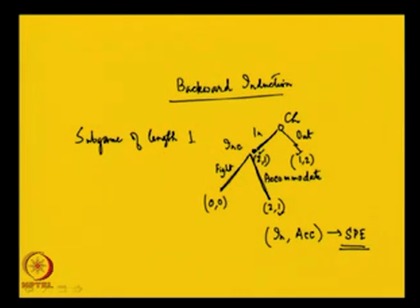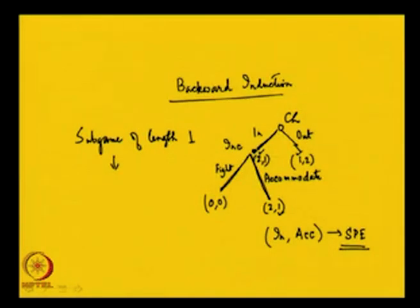What is meant by length 1? The length of the longest terminal history in a game is called the length of that game. A subgame of length 1 has its longest terminal history of length 1. I take each subgame of length 1 and look at the player who is to move at the beginning of those subgames, finding their optimal action — or in many cases, actions, since more than one action may be optimal.